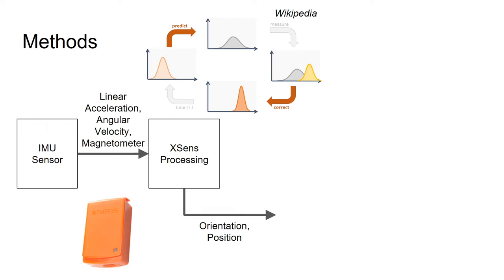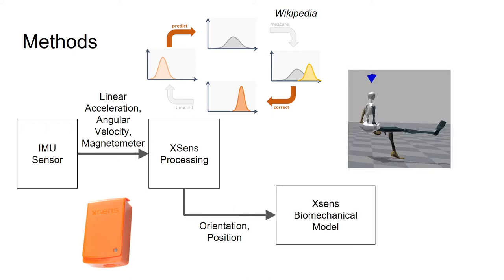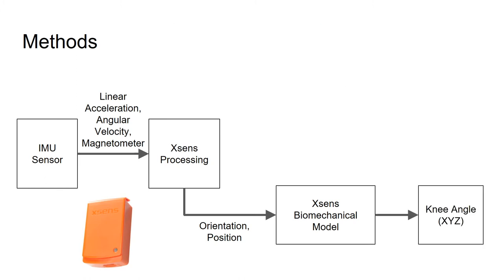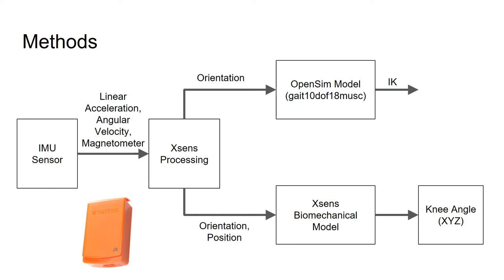This orientation data is then fed into a biomechanical model to move the model's body segments, and from this we can calculate joint angles such as knee angle. In this project, we input sensor orientations from the XSens processing in an OpenSim inverse kinematics script, or IK, that output model kinematics, specifically knee flexion angle, and we use the gait 10 degree of freedom 18 muscle OpenSim model developed by Seth, Velen, Anderson, and Delp.